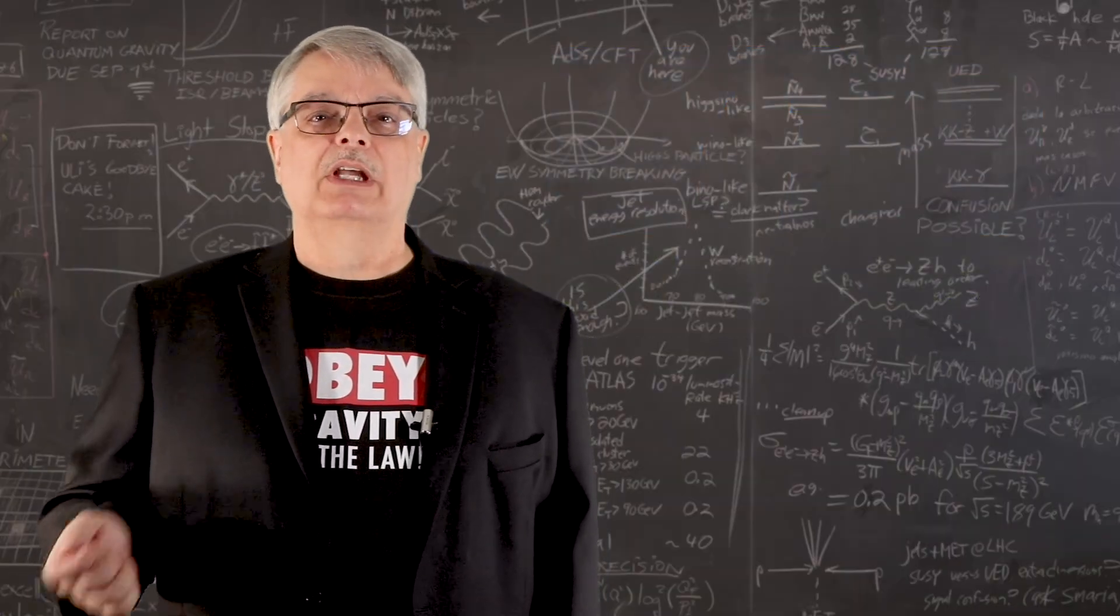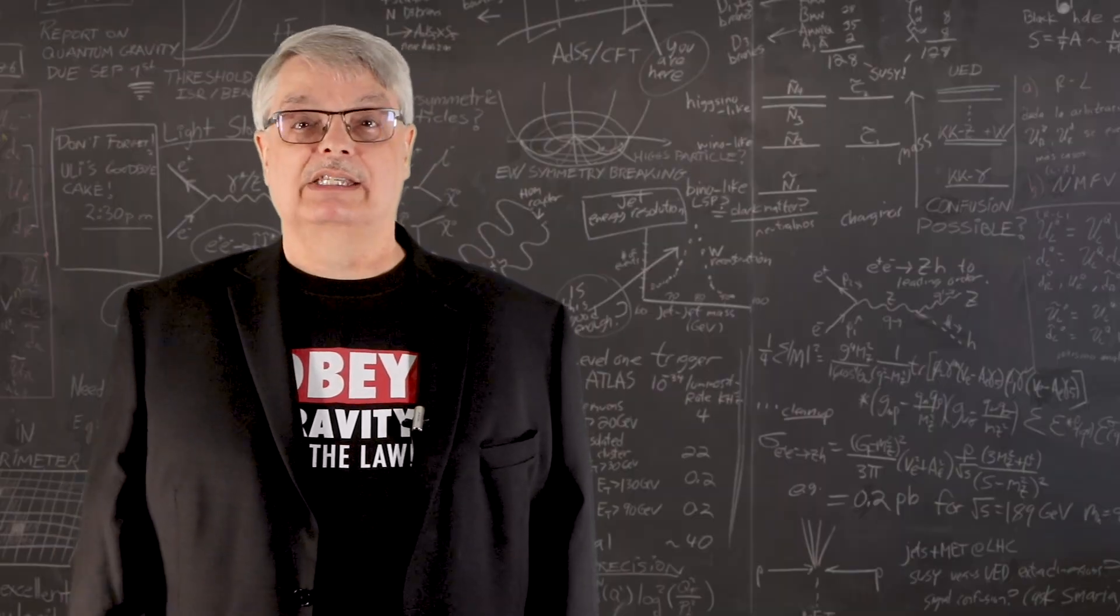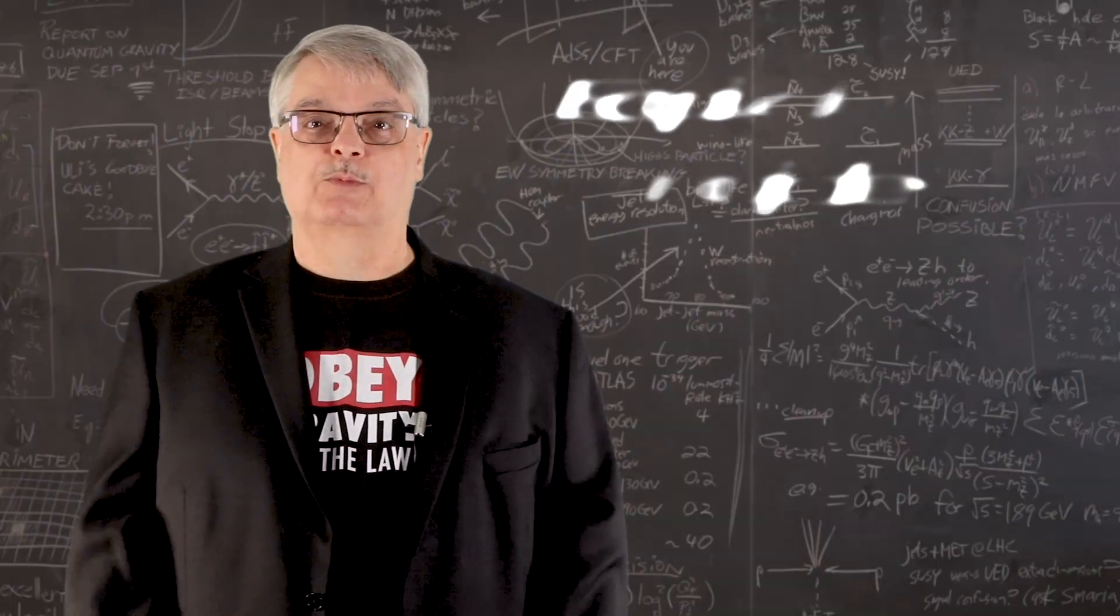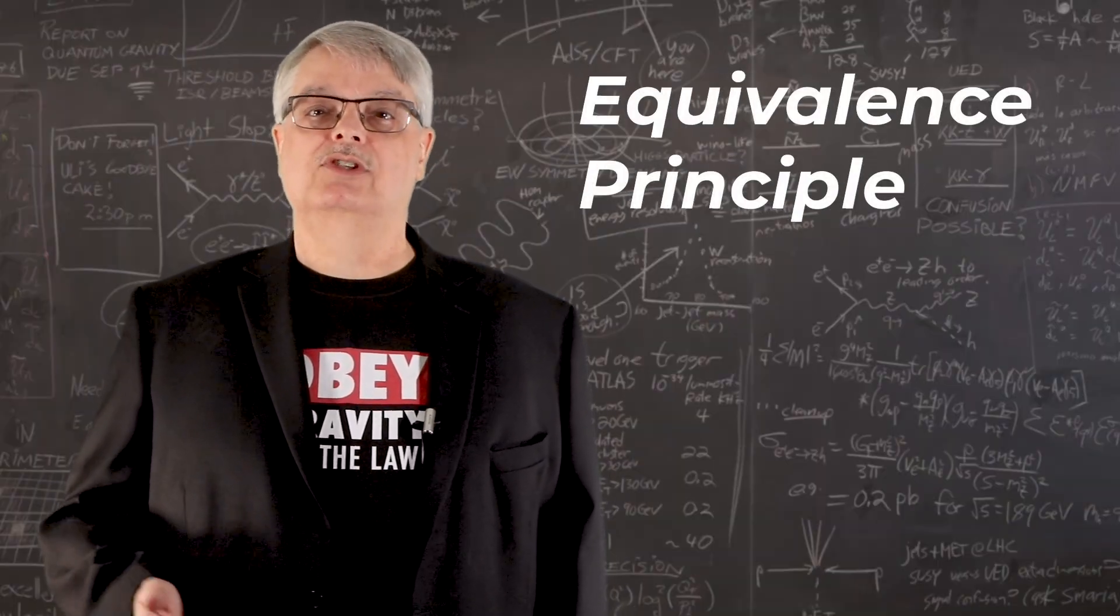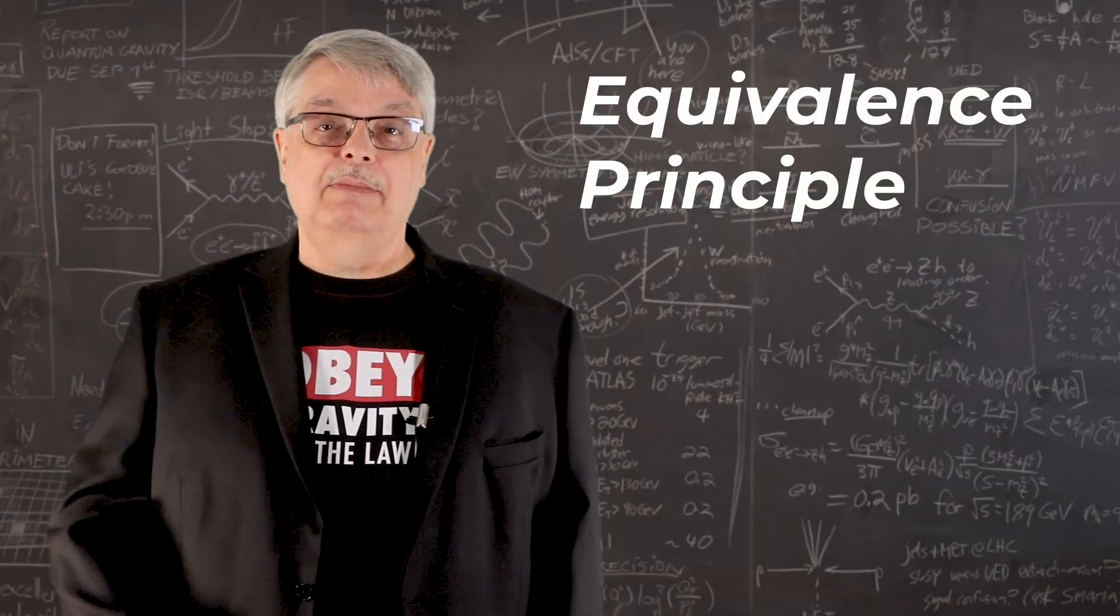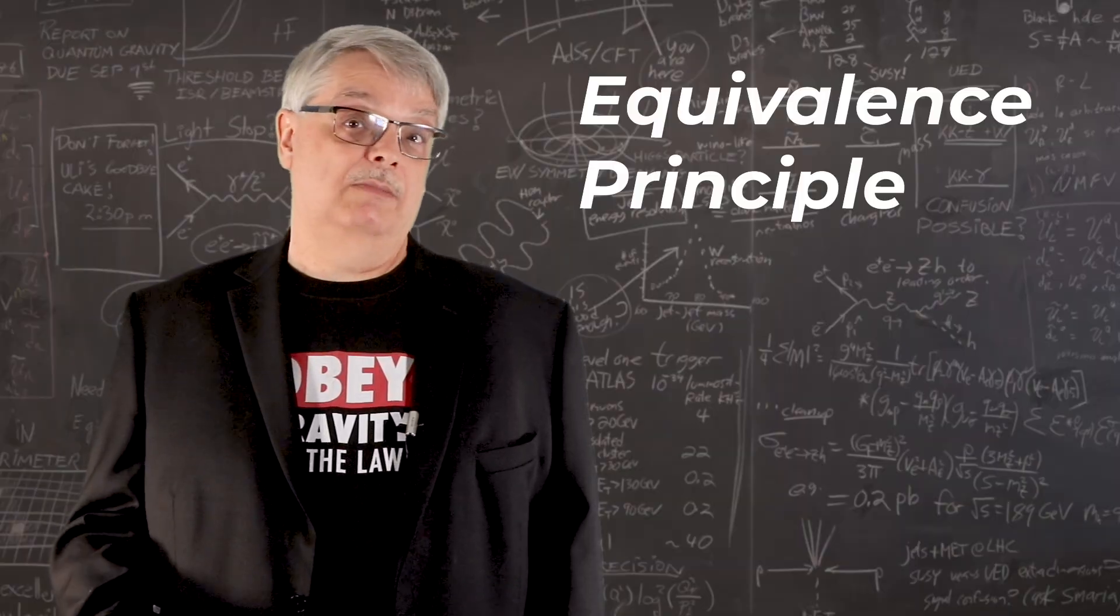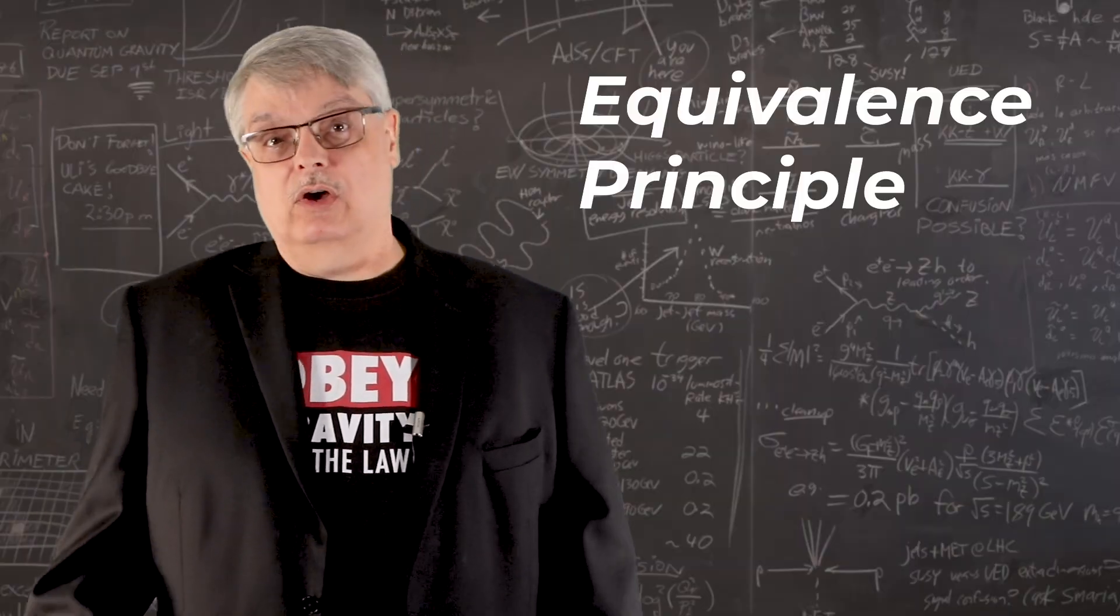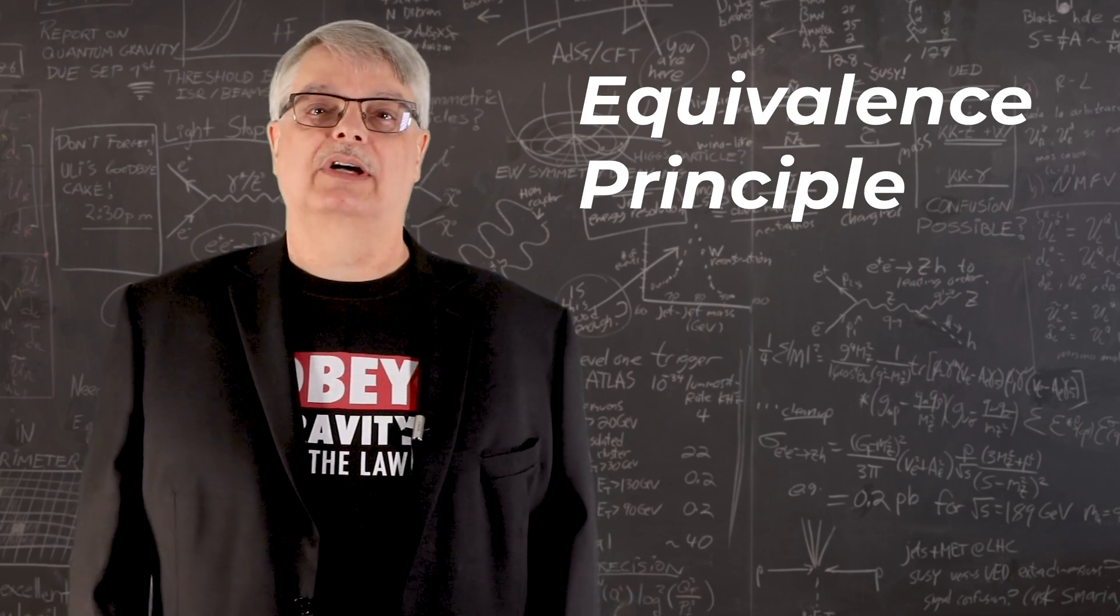For matter, inertial and gravitational mass are the same. In fact, that's a key assumption of Einstein's theory of general relativity. It even has a name. It's called the equivalence principle. But the simple fact is that we've not measured the gravitational mass of antimatter. Maybe the equivalence principle doesn't apply for antimatter. Maybe for antimatter, gravitational mass is the negative of inertial mass. If so, that would be a very big deal. And it is indeed possible that antimatter falls up.